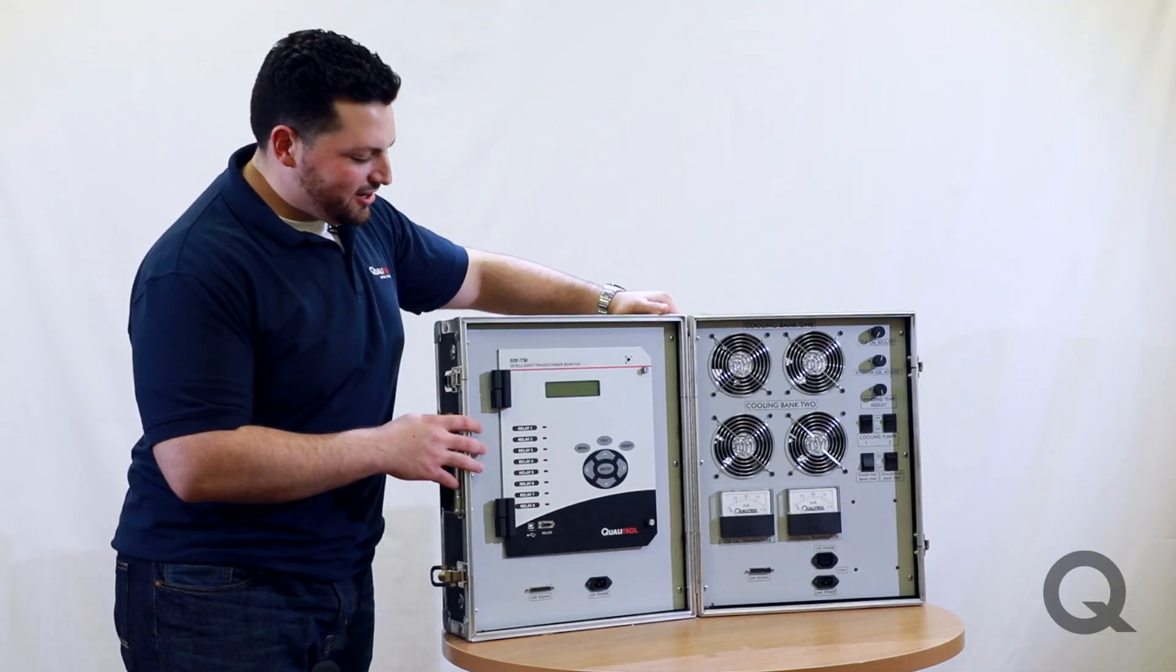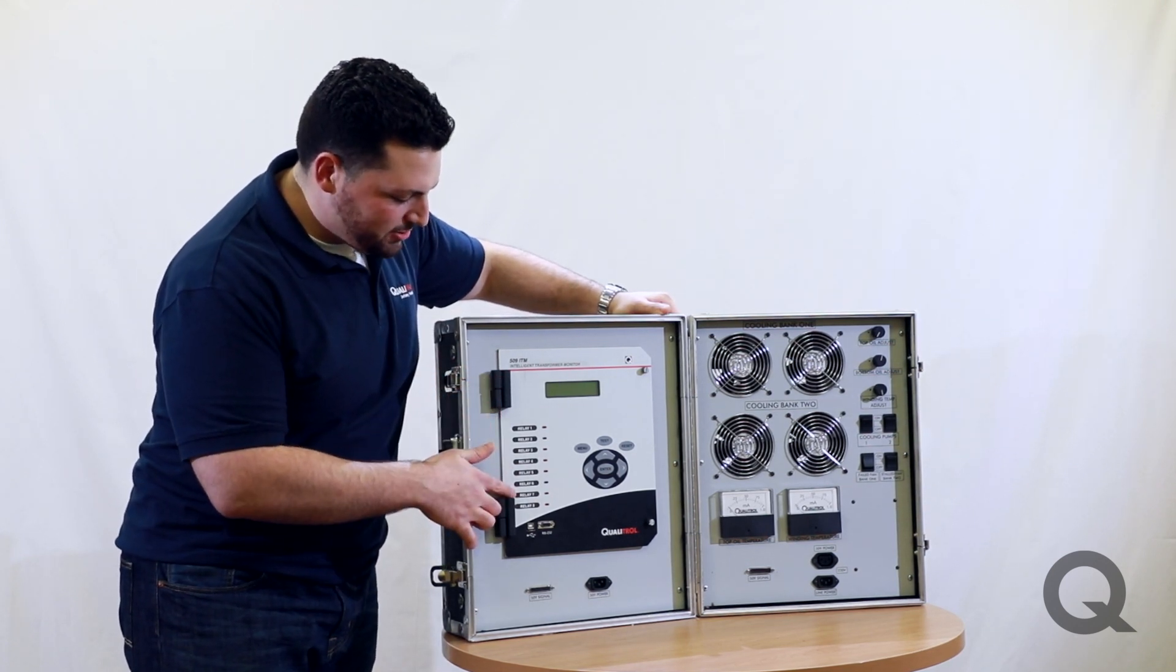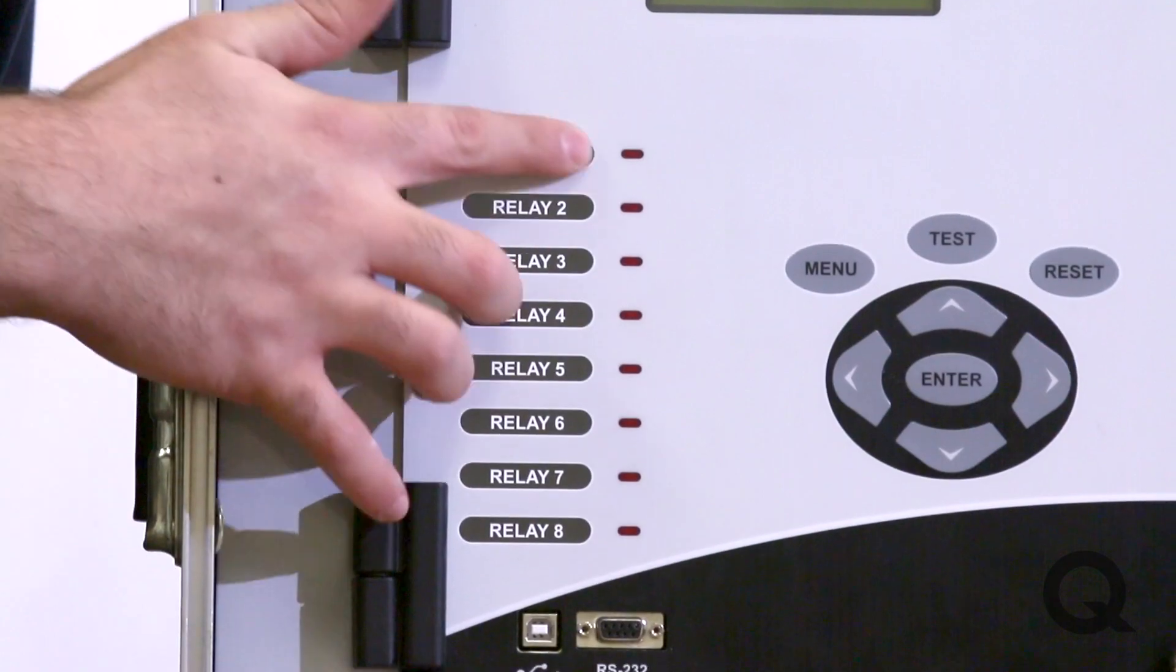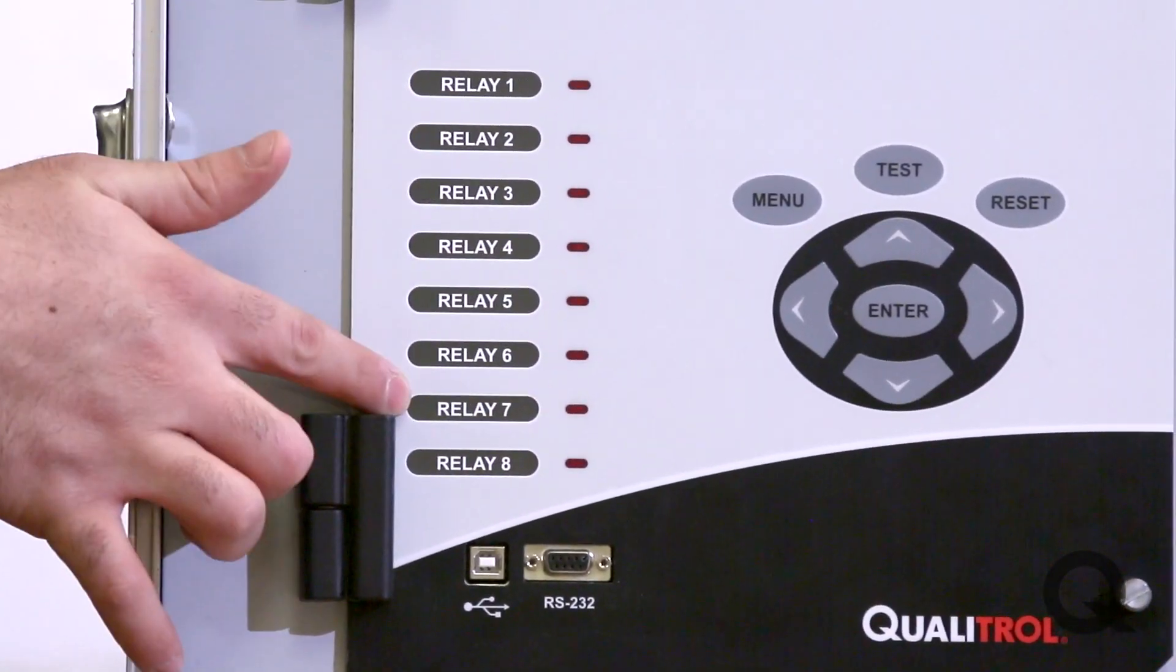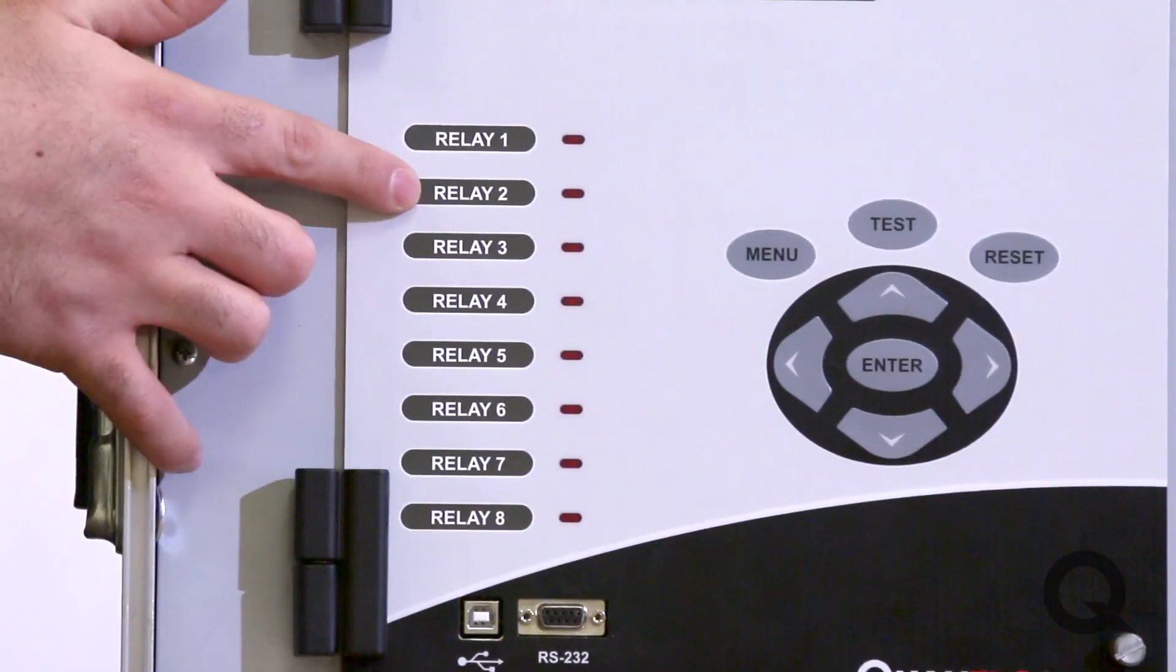We're going to start by taking a closer look at our 509 ITM. As you can see here on the front you have eight relay outputs designated by these LED lights and labels. These are all customizable to your liking. You could have top oil here, winding here if you want.